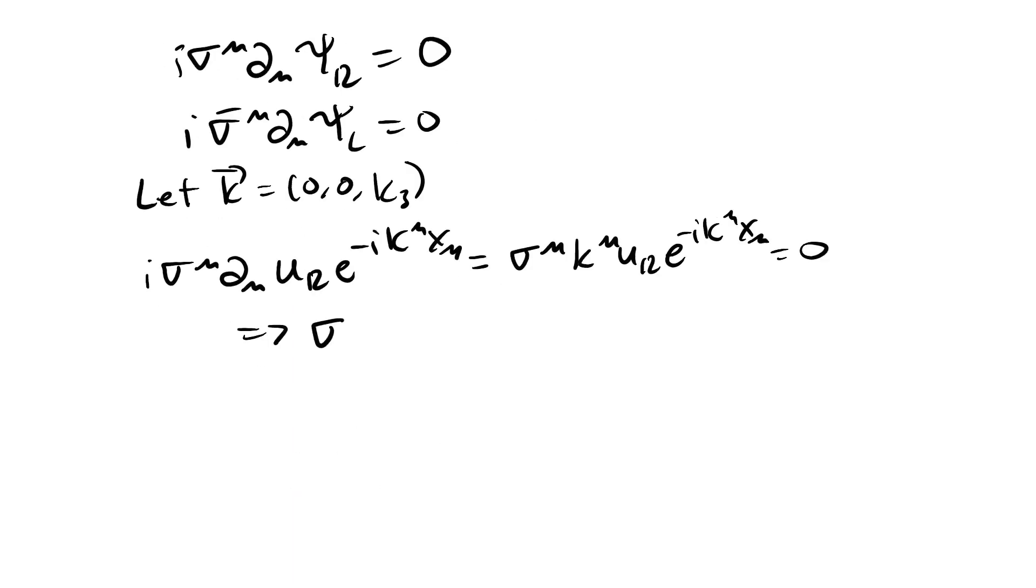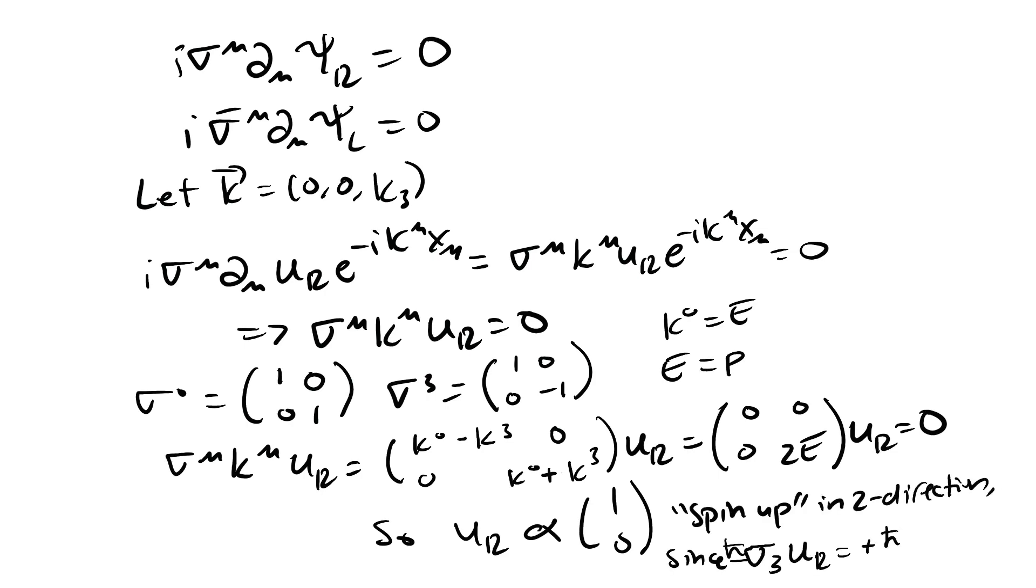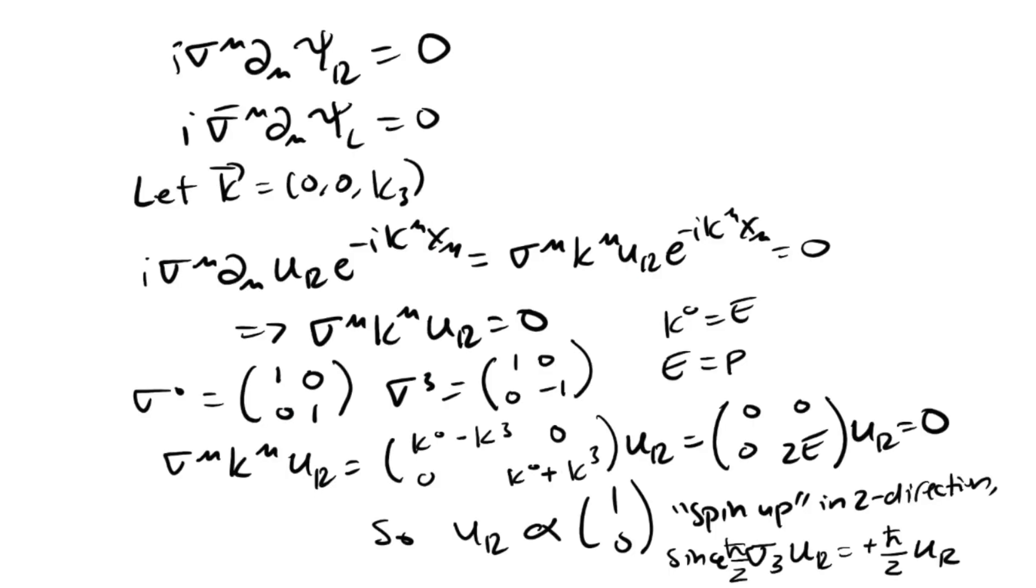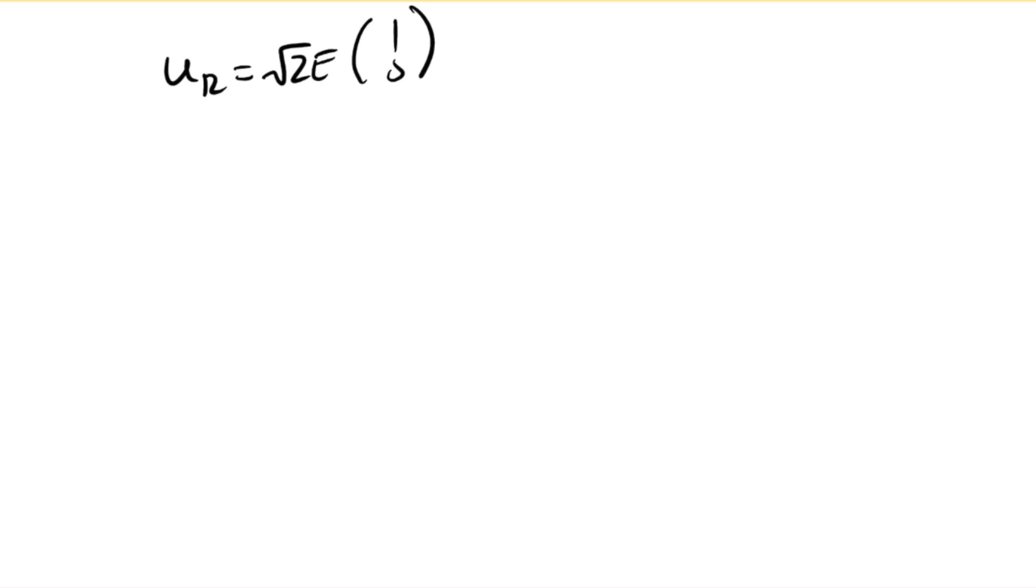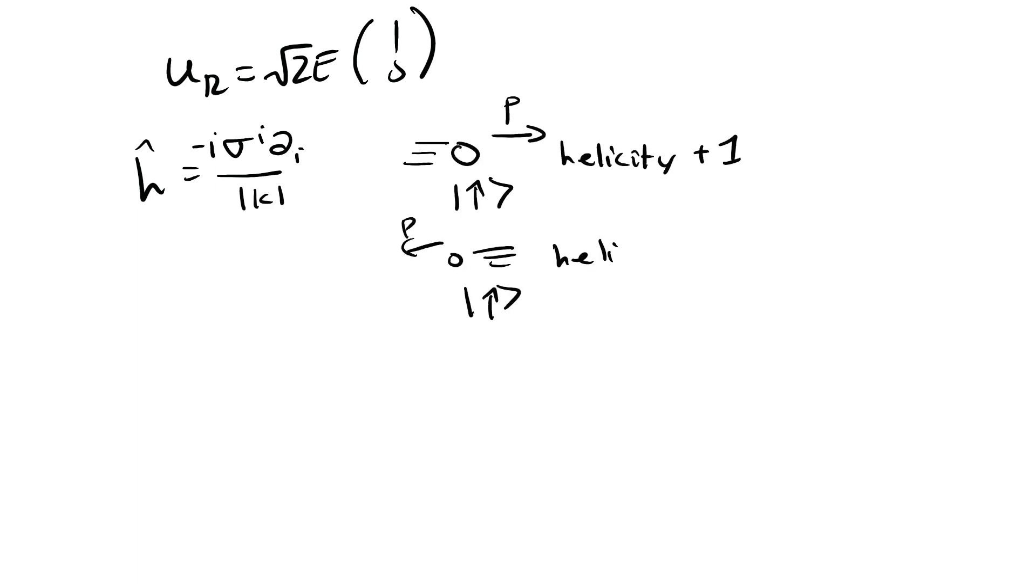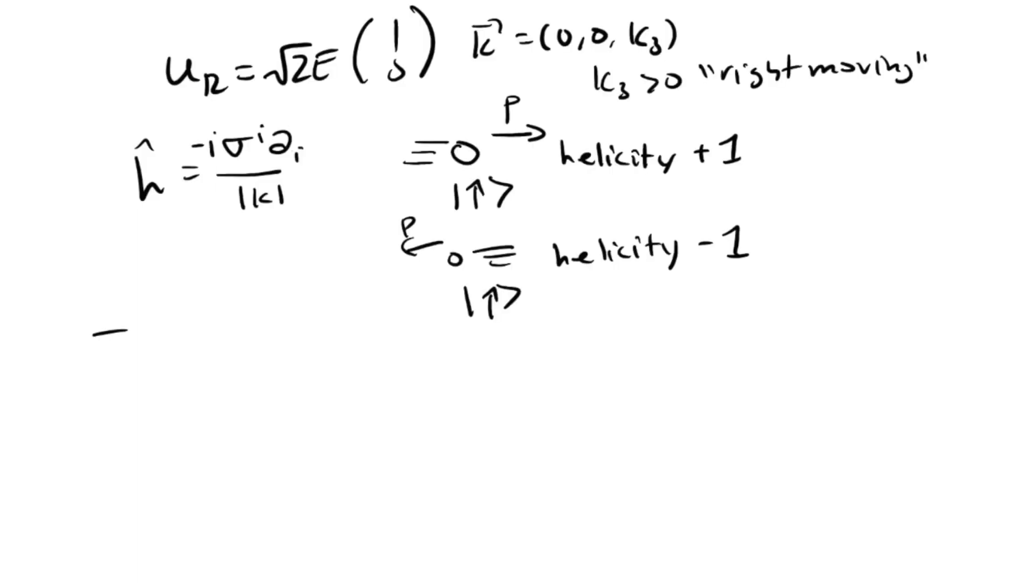For right-handed spinor particles, we can get the solution for the spinor. We can choose a solution where the spinor has a square root of 2E so that the inner product of the spinor will give 2E, which will be helpful when calculating scattering amplitudes. Notice how the spinor must be spin up. This actually makes sense when we look at another property called helicity.